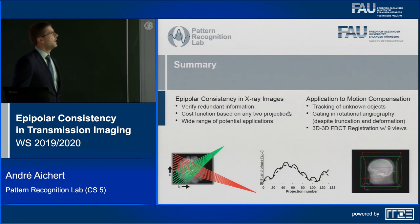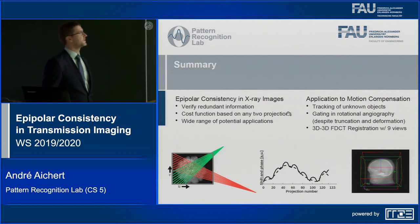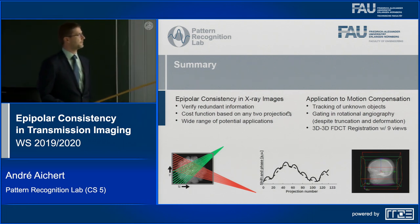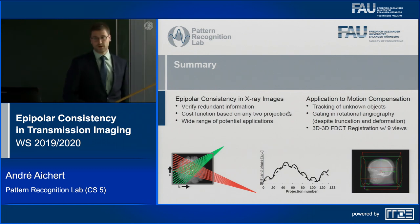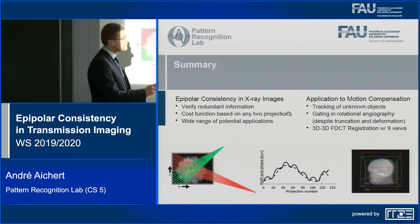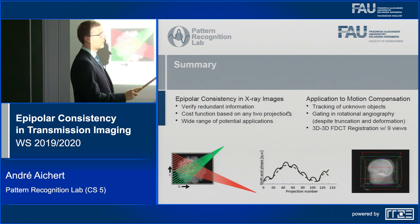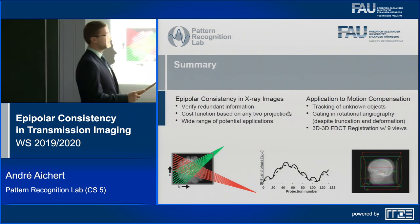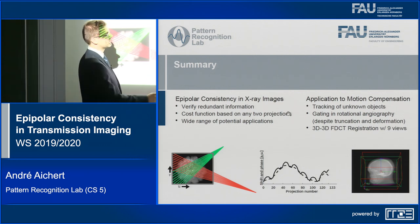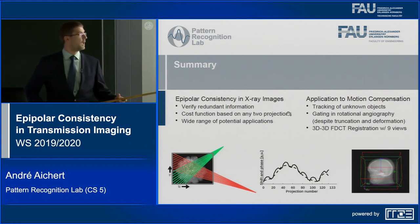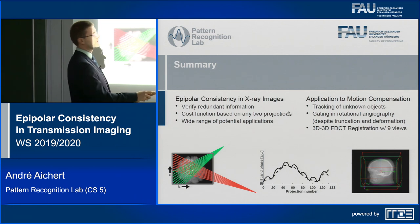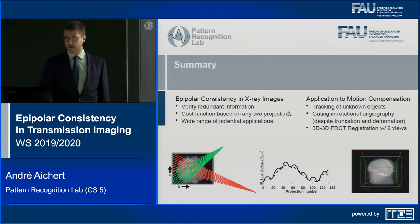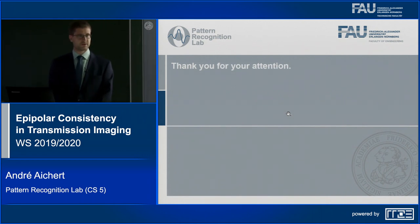In summary: I've explained epipolar consistency conditions in x-ray images — they verify redundant information in any pair of images — and presented a cost function to quantify consistency. I showed three motion compensation applications: tracking of unknown objects with no prior 3D model, gating in rotational angiography despite truncation and cardiac deformation, and 3D-3D registration using only nine projections. This concludes my talk and I hope you got a good impression of this work developed over five years. Thank you.